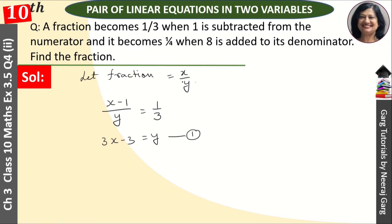Our second condition: it becomes 1 upon 4 when 8 is added to its denominator. Now, we have nothing to do with the numerator. In the denominator, we have y plus 8, and this becomes 1 upon 4.